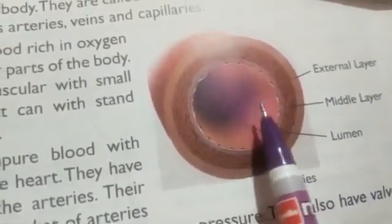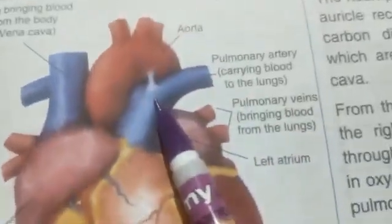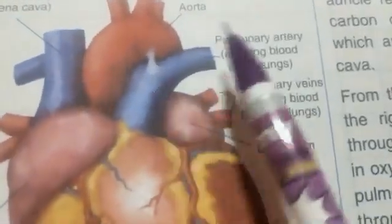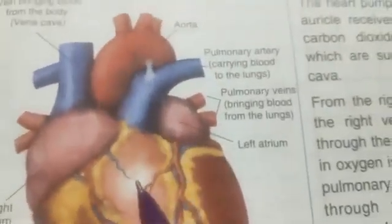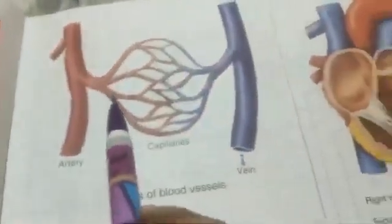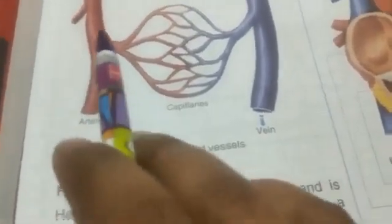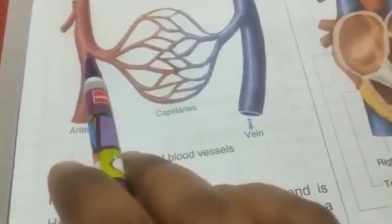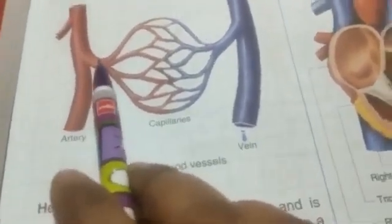Only one artery — the pulmonary artery — carries impure blood to the lungs. All other arteries carry pure blood from the heart to all parts of the body. Arteries further branch into thinner arteries, then into arterioles, and arterioles into fine capillaries.